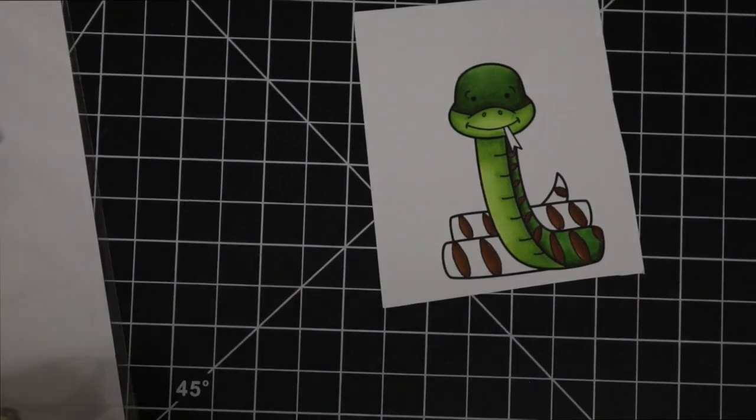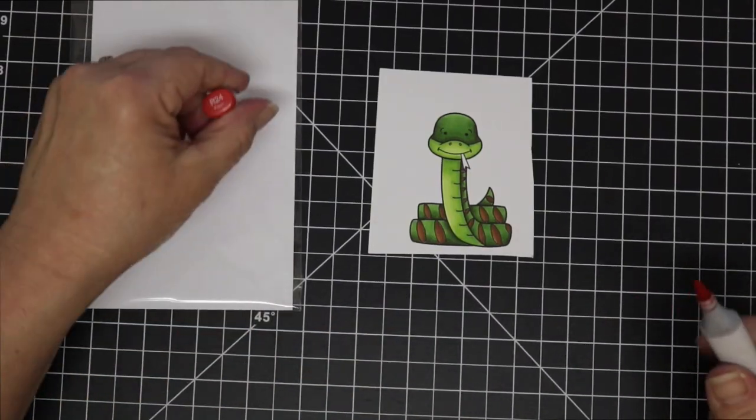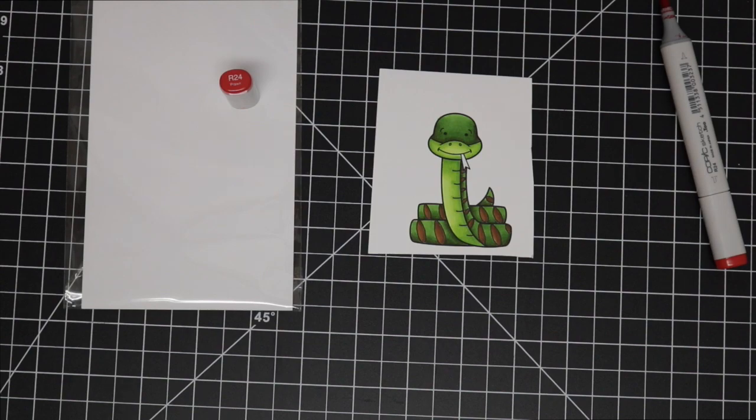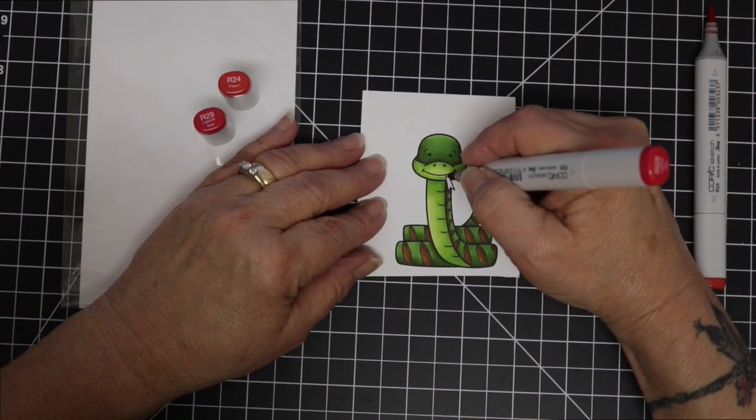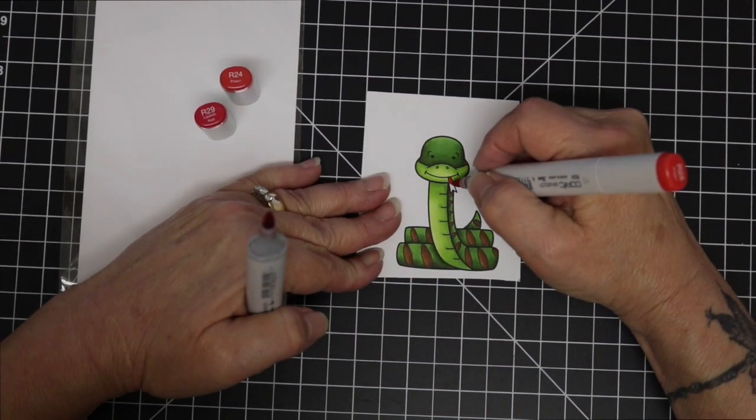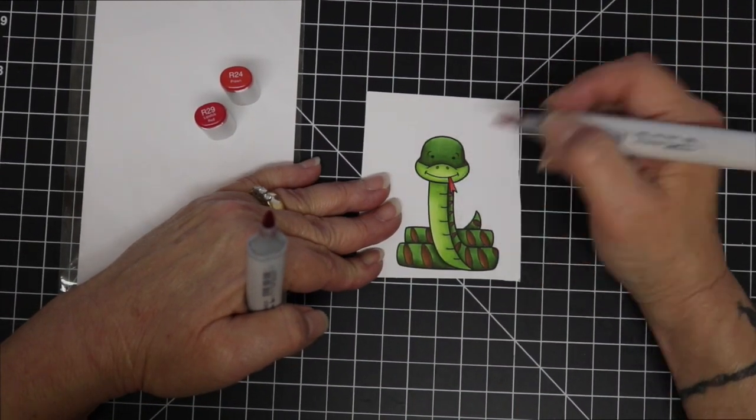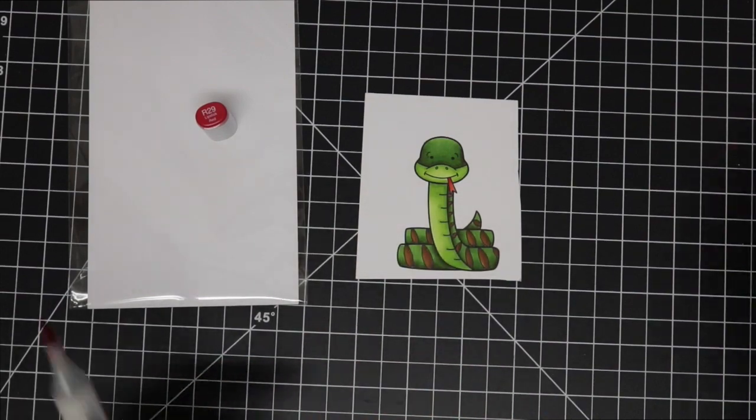So I'm not going to show you the rest of this as it is going to be the same. So I'll move on to his tongue now and I'm just using an R24 and R29. That is an extremely small area so it just takes a second.